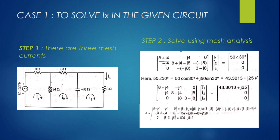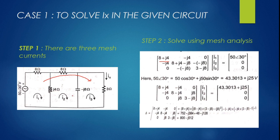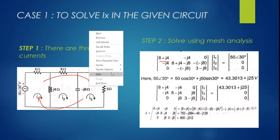Writing the mesh matrix for the AC circuit Case 1 using impedances: Z11 = 8+j4, Z12 = −j4, Z13 = 0 (no common element between meshes 1 and 3), Z22 = j4+8−j8, Z23 = −(−j8) = +j8, Z33 = 3−j8. Voltage column is [50∠30°, 0, 0]ᵀ. Converting 50∠30° = 50cos30° + j50sin30°.